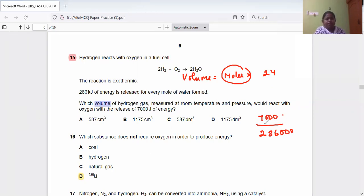So 7000 divided by 286,000 joules. When you divide this, you get 0.0245.